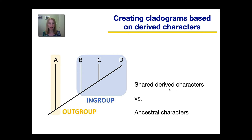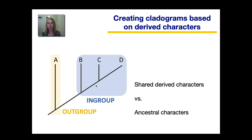Let's talk about shared-derived characters versus something called an ancestral character. An ancestral character is something that evolved in the ancestor of all of the species you want to compare. So if everyone in our in-group has a backbone — they're all vertebrates — then that would be an ancestral character for this group. But if, say, C and D have four limbs and B doesn't, then the presence of four limbs would be a shared-derived character. It is derived because it only came to be in this lineage after they split off from B, and they share it together — hence, shared-derived character.